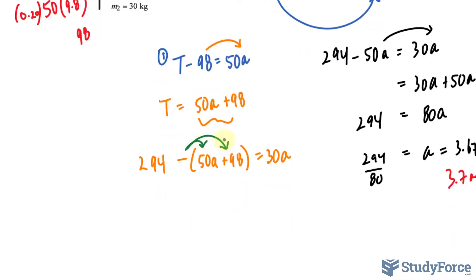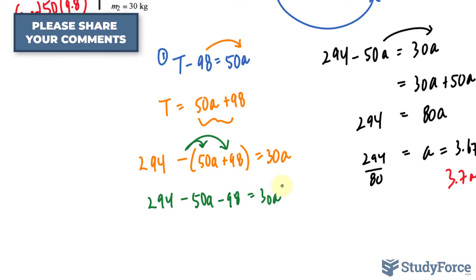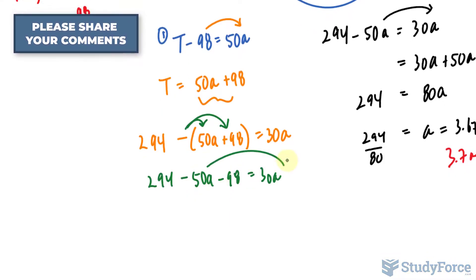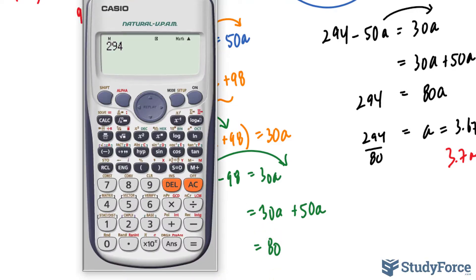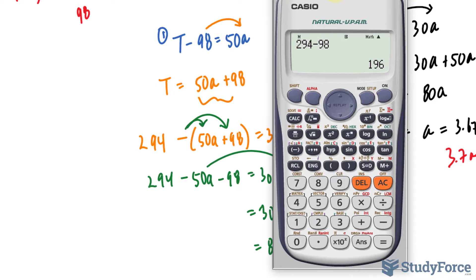Where we have 294 minus bracket 50A plus 98 equals 30A. Now we throw this negative into this expression where we have 294, and by the way that's called expanding, minus 50A minus 98, and now we play the solving game. We just bring that over. We have 30A plus 50A, that makes 80A, and on the left side, we're left with 294 minus 98. That's 196.